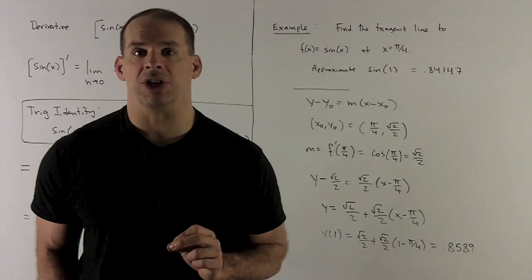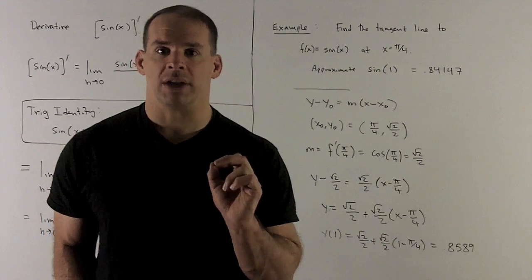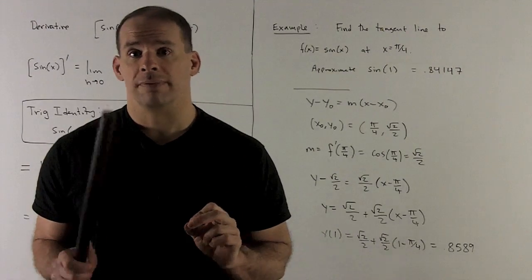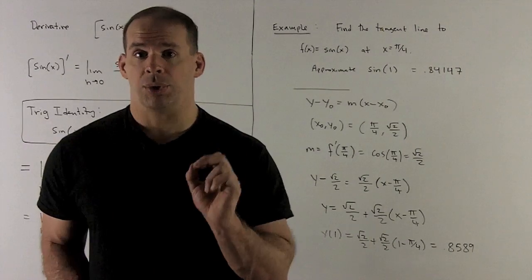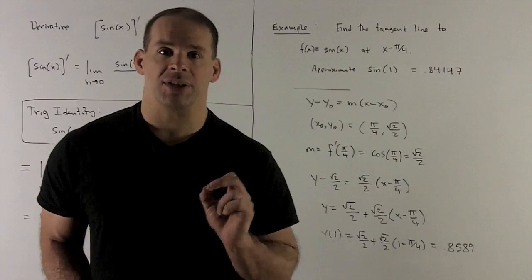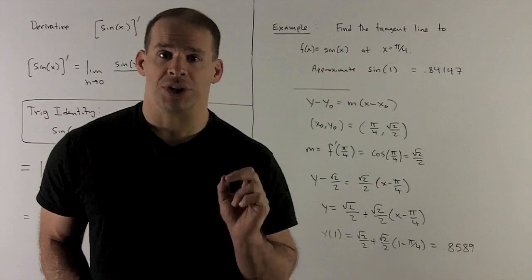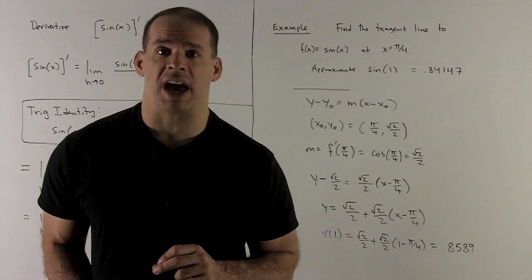All right, let's take a look at an application. Find the tangent line to f of x equal to sine of x at x equal to pi over 4. Once you get your tangent line, approximate sine of 1.